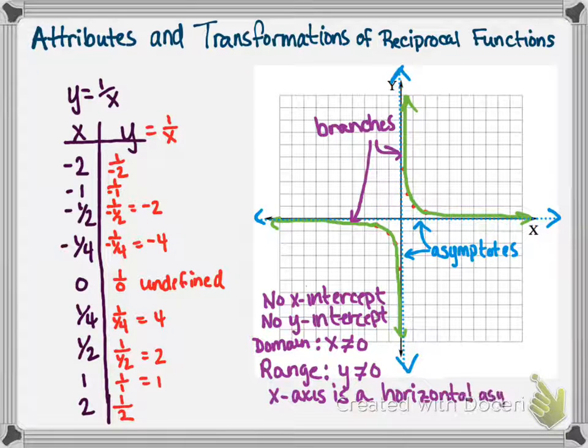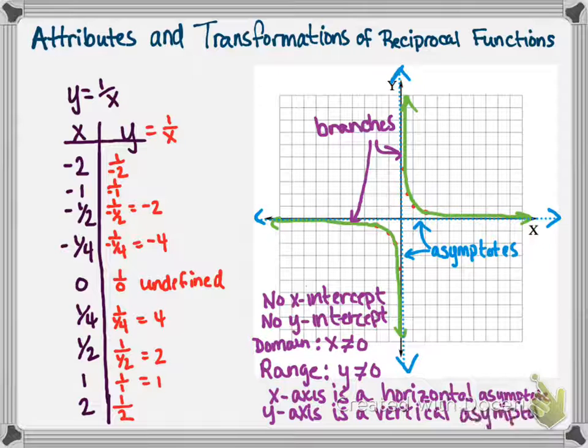The x-axis, as I stated, is a horizontal asymptote, and the y-axis is a vertical asymptote. These are key features of the reciprocal function.